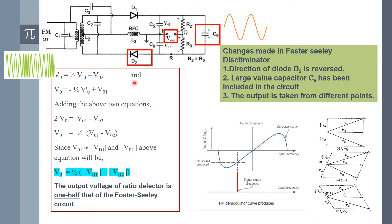This entire circuit operation is almost similar to the Foster-Seeley discriminator. The final formula has only a slight difference: V_output = (1/2)(VD1 − VD2), or equivalently V_output = (1/2)(V01 − V02). This is the corresponding final equation of the output of the ratio detector. This ratio detector operates and follows the characteristics of the Foster-Seeley discriminator.